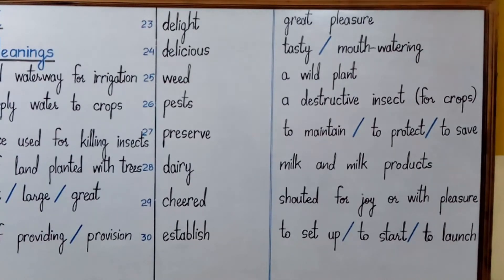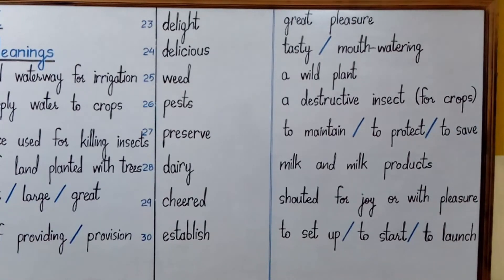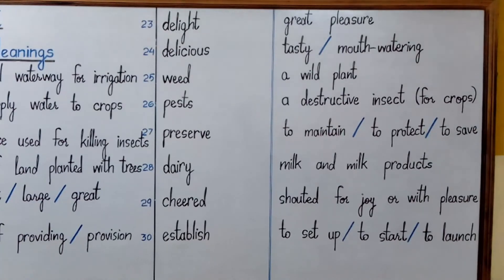Number twenty-six is 'pest'. Pest is a destructive insect which attacks crops and restricts them from growing. In fact, it can destroy the whole crop. That insect is called a pest.